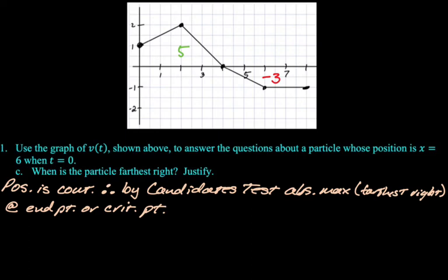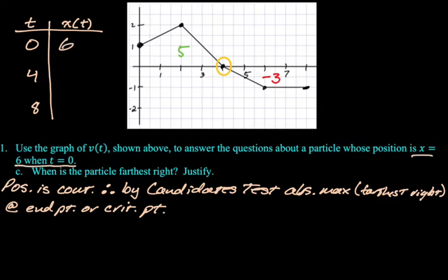And so the endpoints are 0 and 8, and then the critical point is 4. So I'm going to make a table. That's the only place the derivative, the velocity is equal to 0. We put our endpoints and our critical points. So we know that we're starting at 6 because it's given. X is 6 when t is 0. So that'll be 6. And then we move 5 to the right. So we add 5 to that, so we get 11.